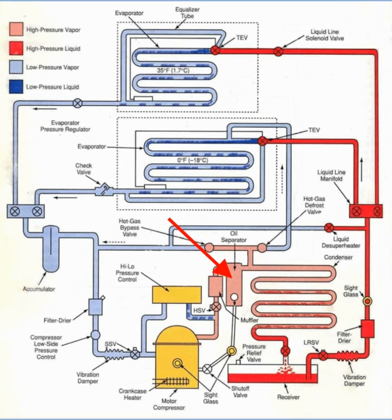The second type is impingement. It has metal screens at the input and output of the separator where the oil condenses on the lower temperature grid screens and slides down to the bottom.